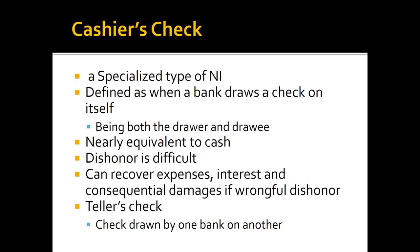Bank of America is both the drawer and the drawee — that's what makes it a cashier's check. It is used in situations where you want an added level of security but you want the certainty of cash. I don't want to take a personal check from you because I don't know if it's good, but I'll take a cashier's check. It is nearly equivalent to cash, more difficult to dishonor, and there are more ways to recover expenses, interest, and consequential damages if there's wrongful dishonor.